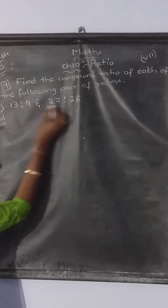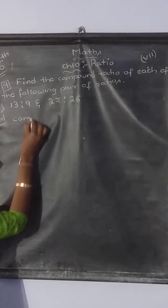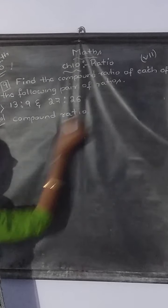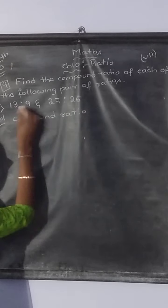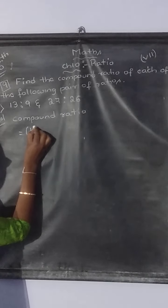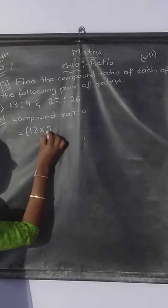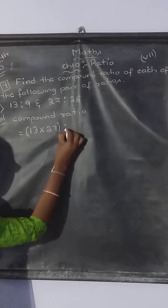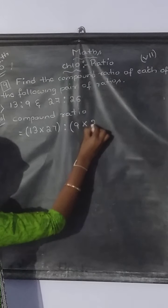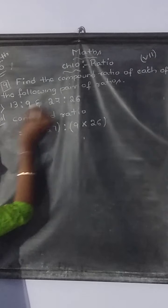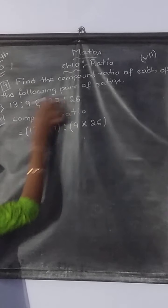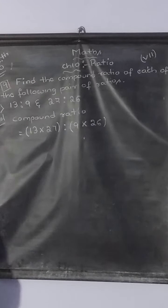How to find compound ratio children? These 2 ratios they have given now. Their compound ratio will be equal to - the antecedent of compound ratio is the product of these 2. In this ratio which is the antecedent? 13. Into. In this ratio which is the antecedent? 27. Is to. Now multiply both the consequents. 9 into 26. See, 9 is the consequent of this ratio, 26 is the consequent of the second ratio. If I multiply both the consequents I will get the consequent of compound ratio.